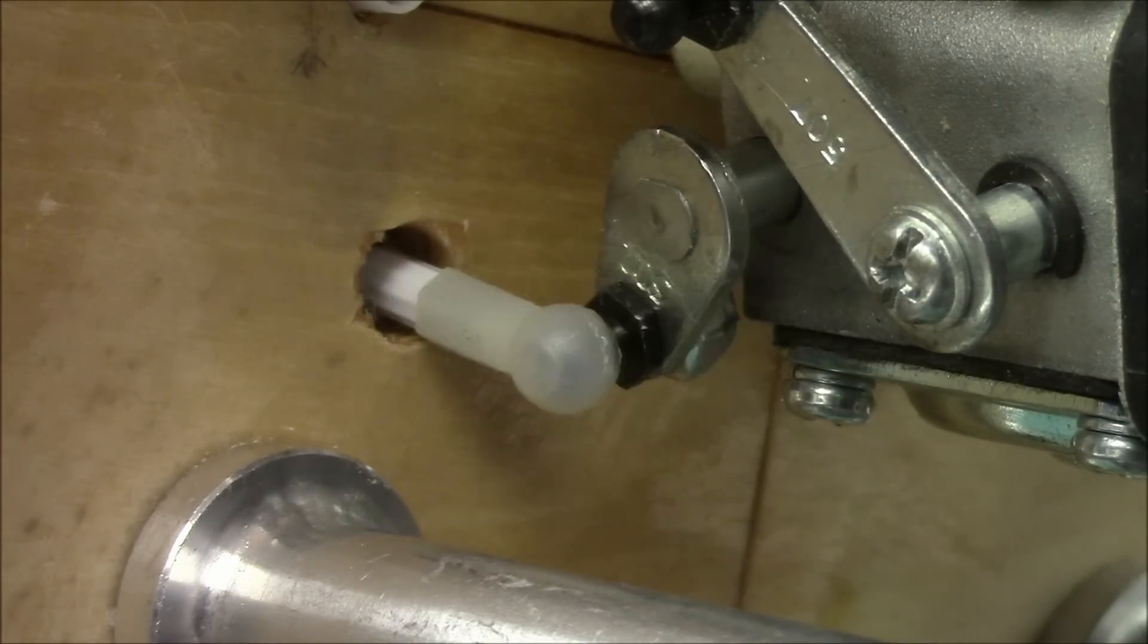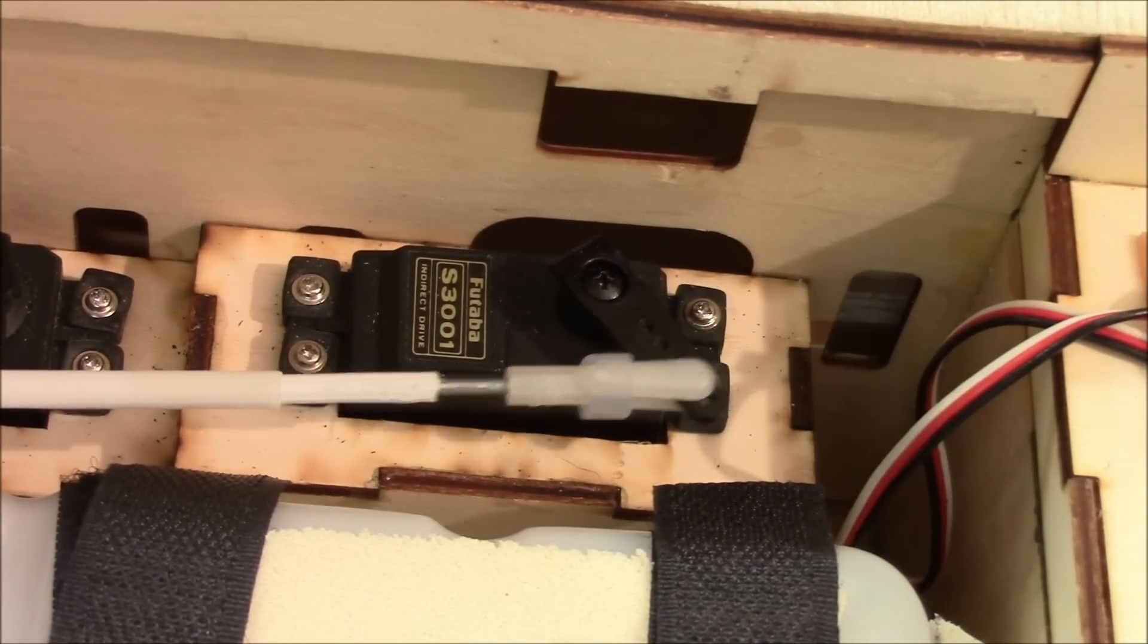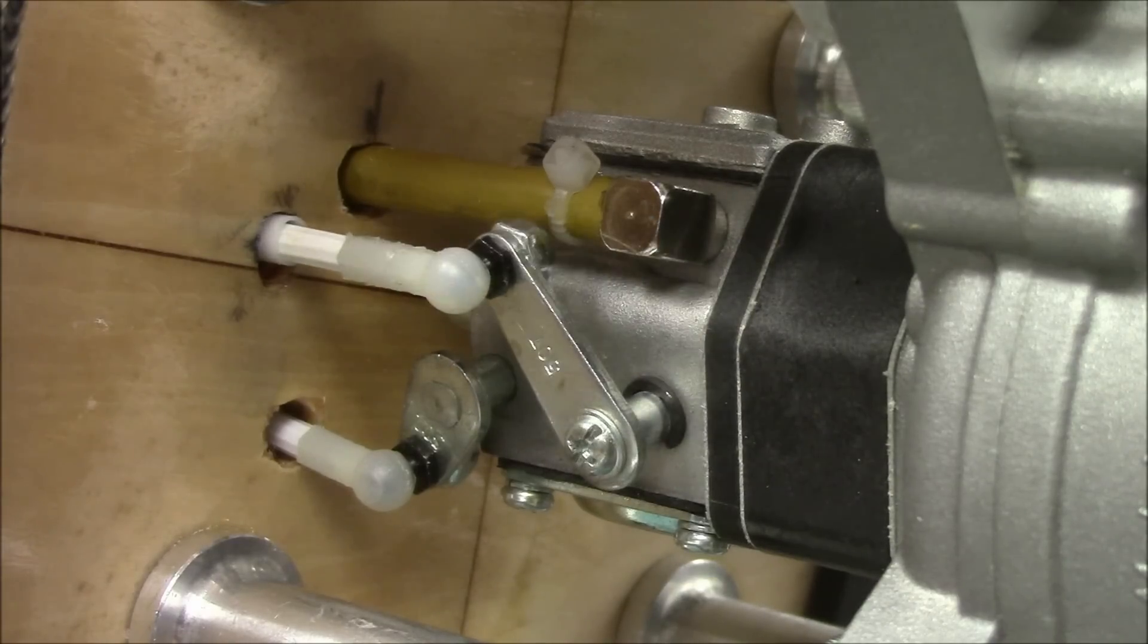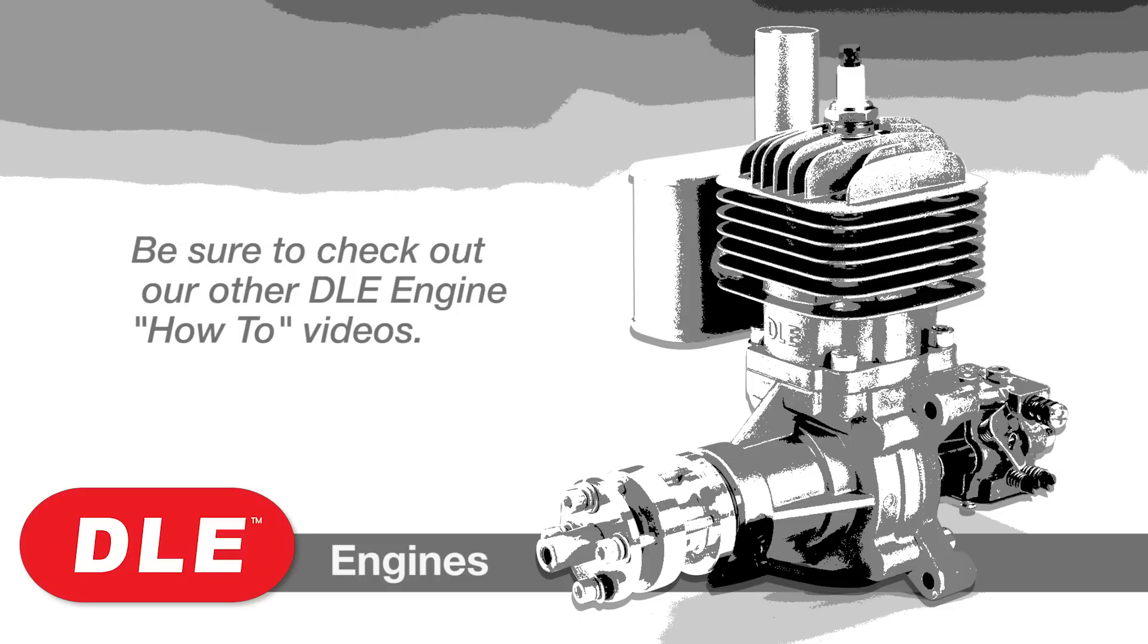The throttle push rod is set up the exact same way. You should use your throttle trim button to keep the throttle from closing completely at idle. Check out our next video showing how to drill and mount your propeller.